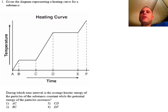Here we have question one. Given the diagram representing a heating curve for a substance, and here is that heating curve, it's climbing, it's an endothermic situation. The question reads: During which time interval is the average kinetic energy of the particles of the substance constant while the potential energy of the particles is increasing? So average kinetic energy means temperature. That's its definition.